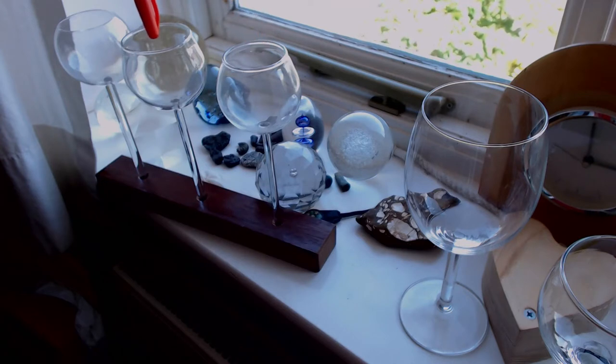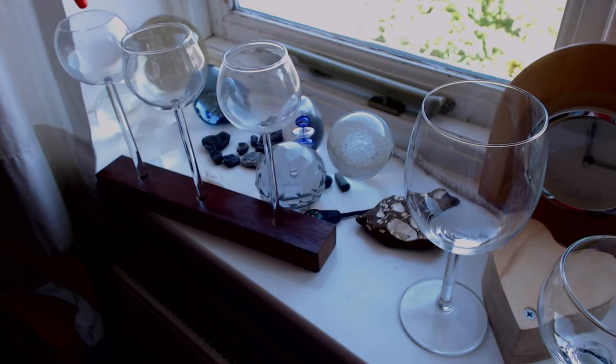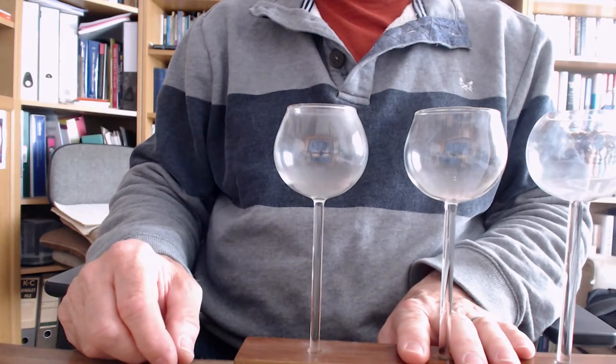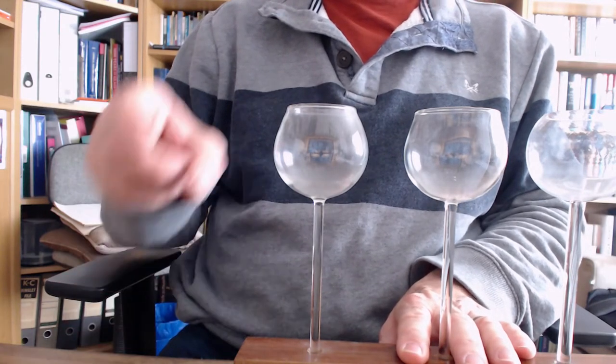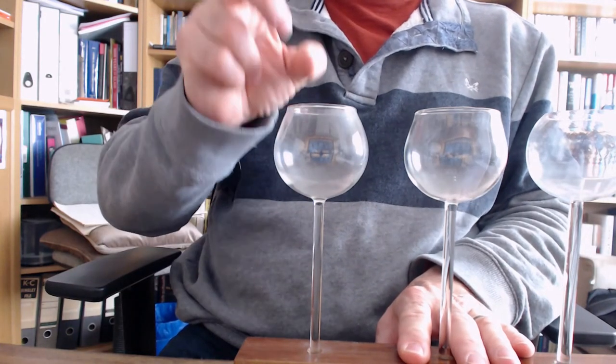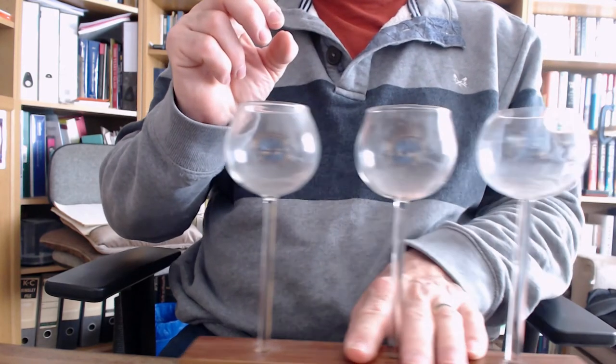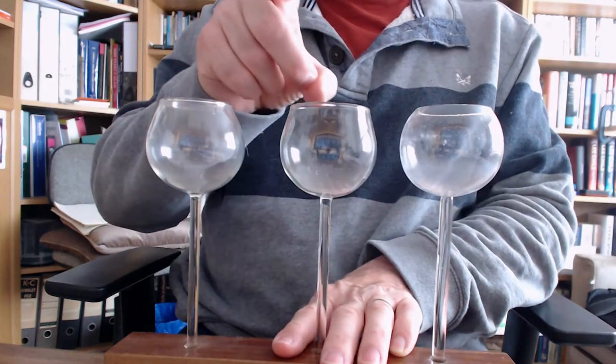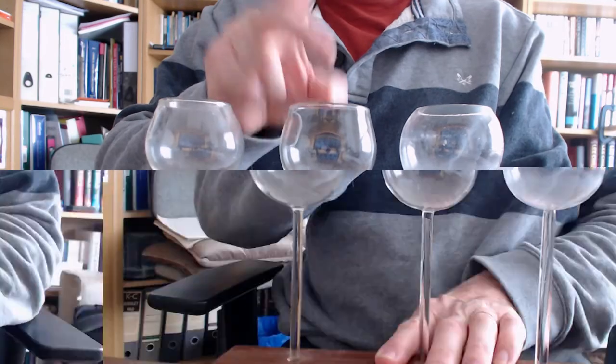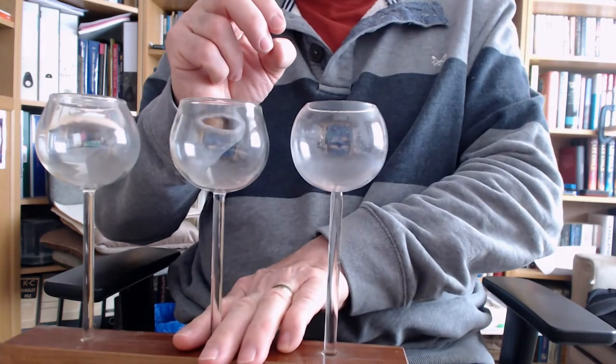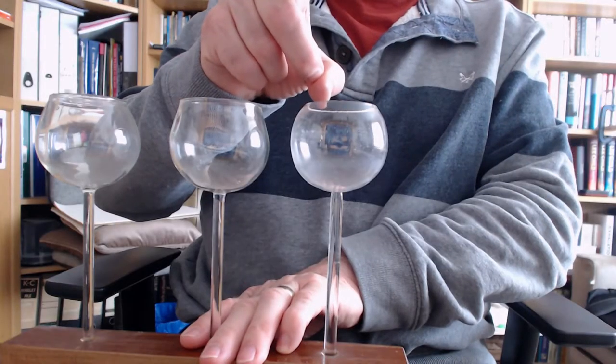A lead glass, so here we're into the slightly grander wine glass end of the spectrum. To this one at the end which is made from pure quartz. Let's start with the soda lime glass. I'm going to move on to the lead crystal and finally to the glass made from pure silica.